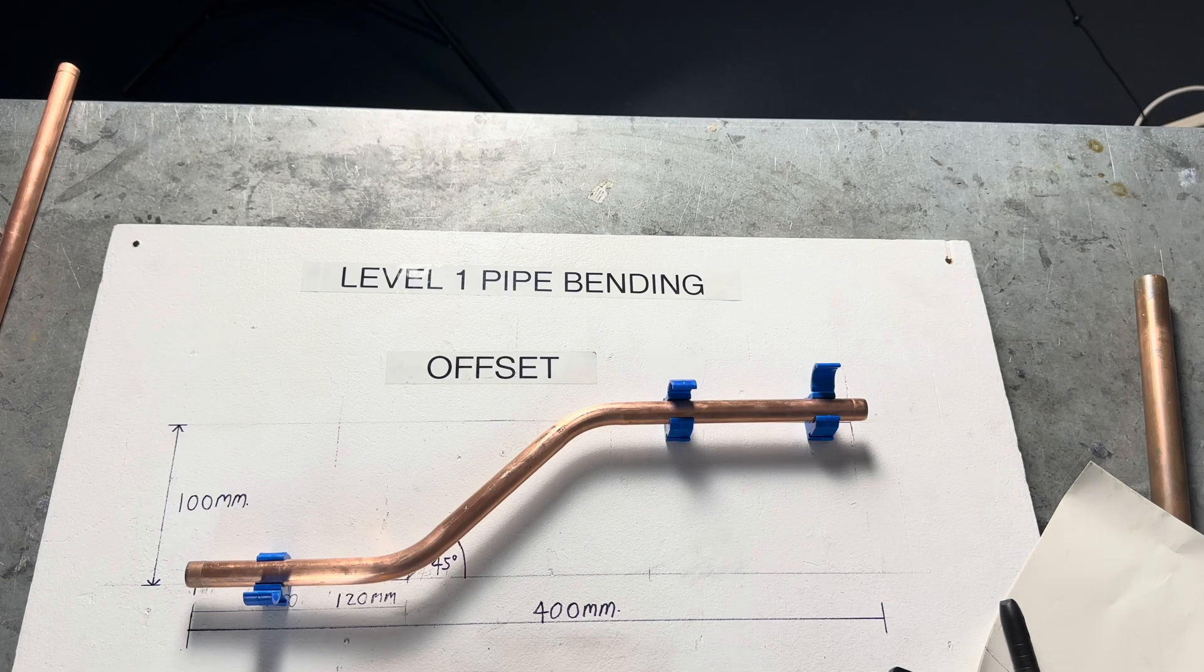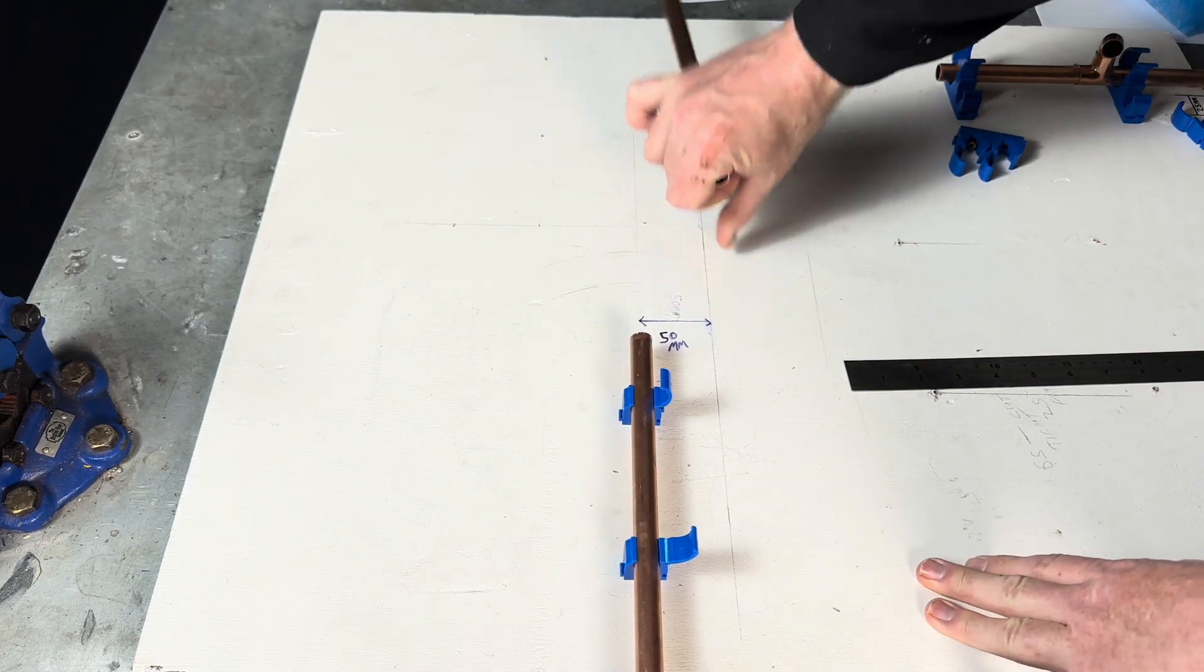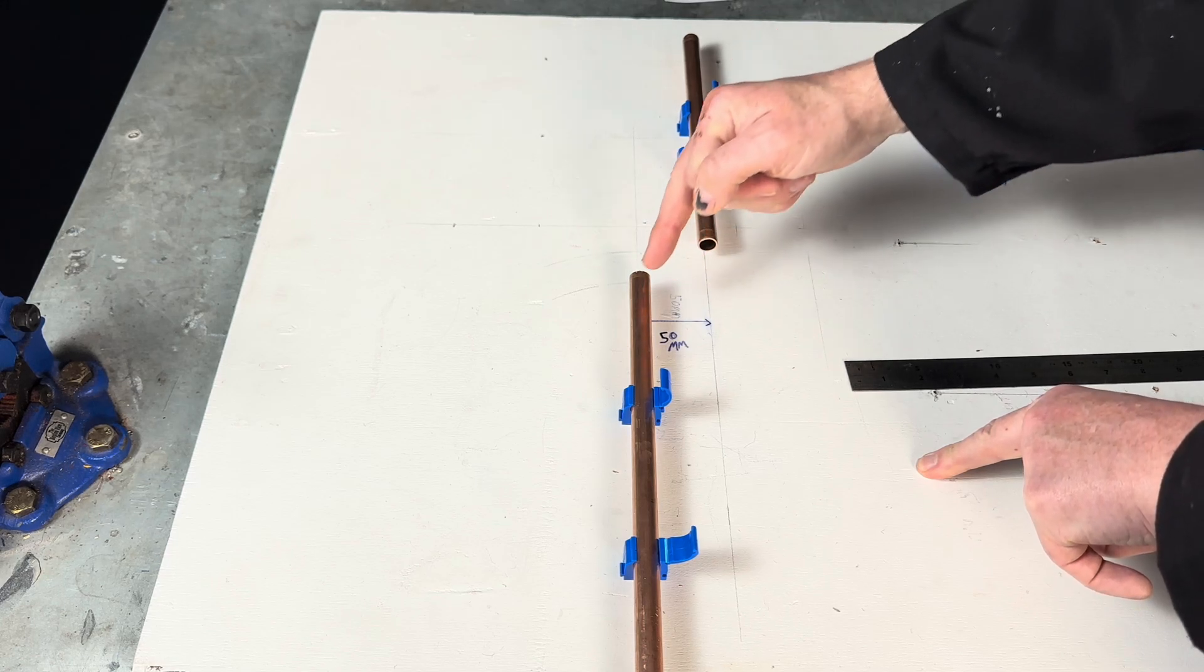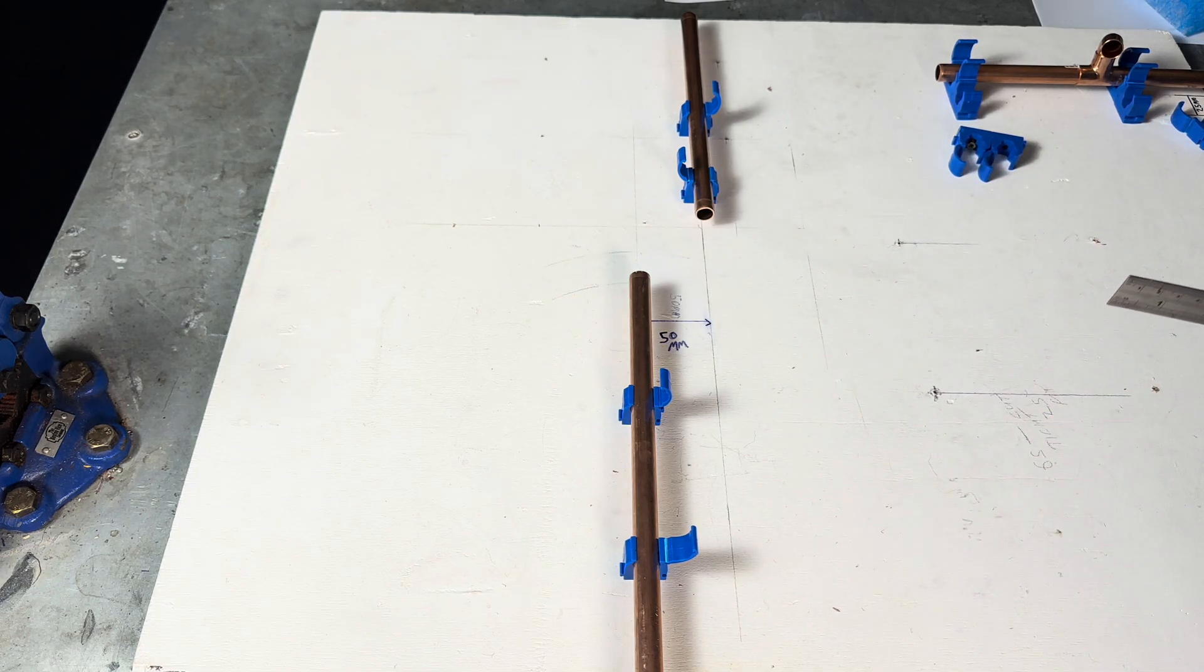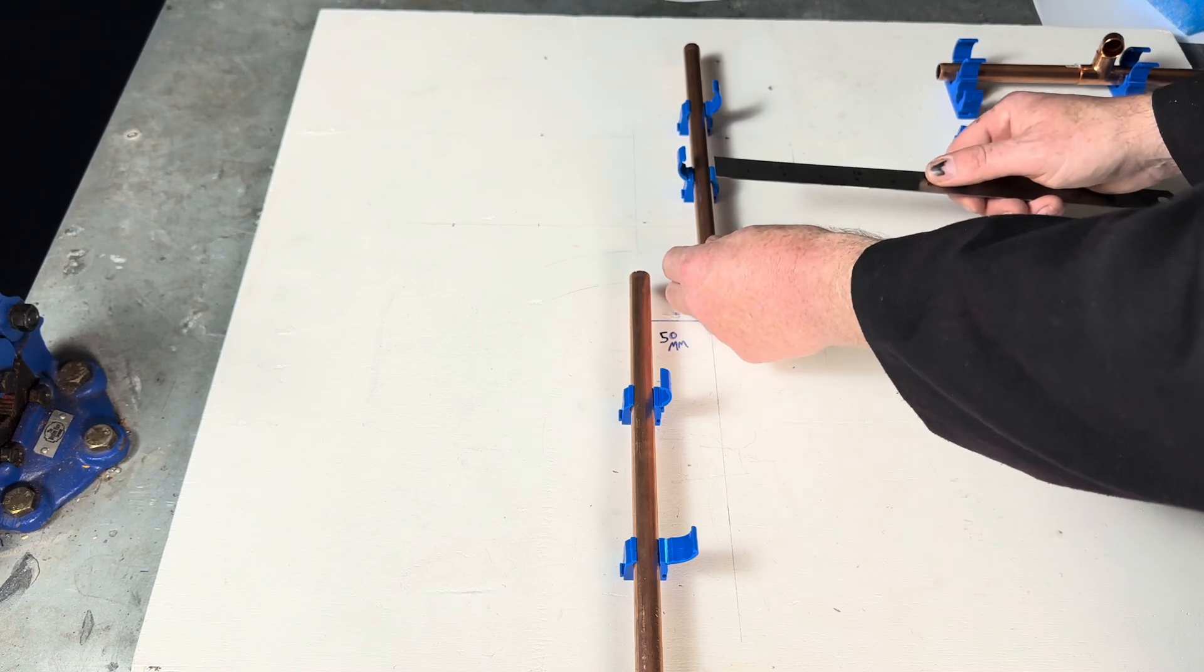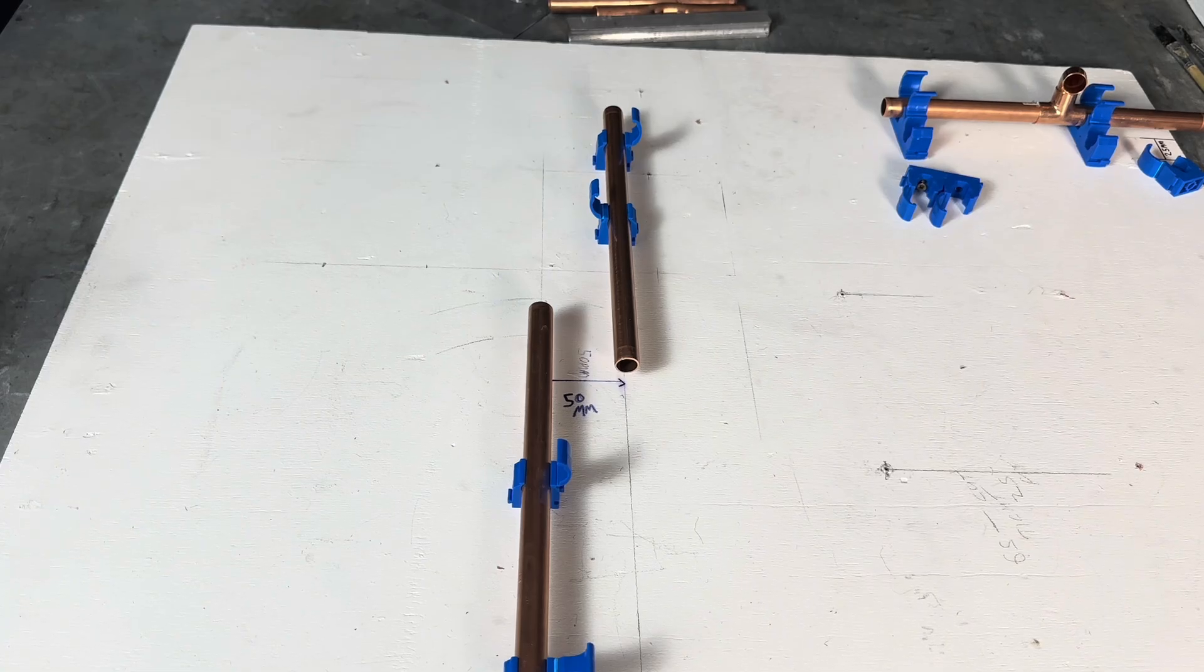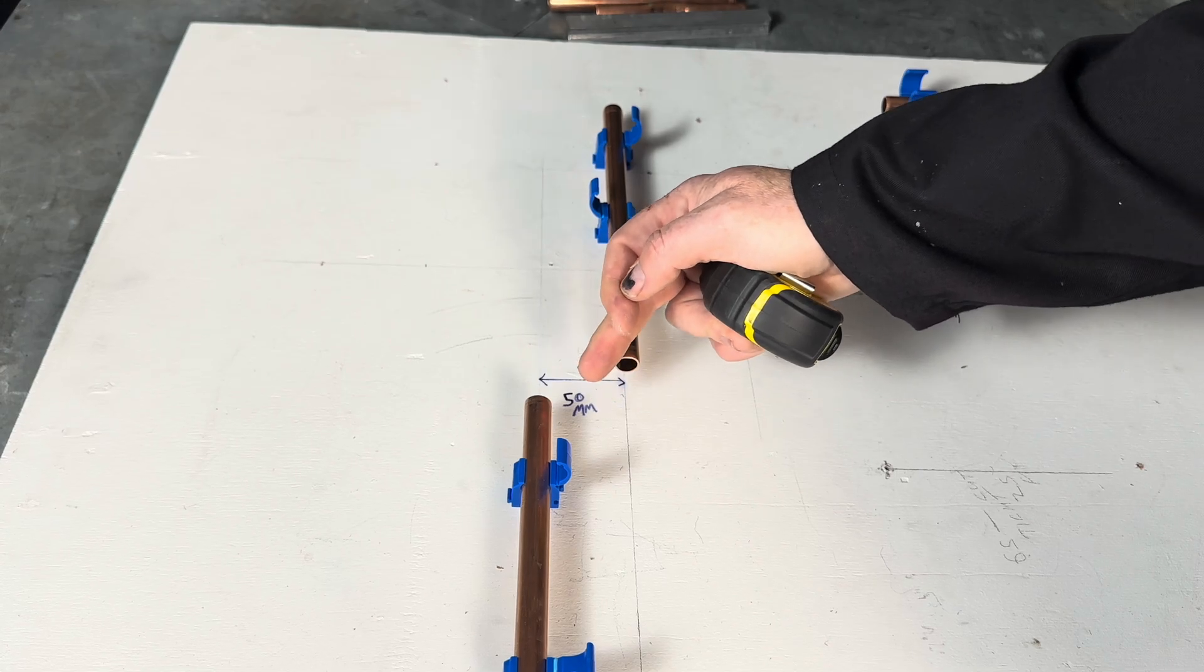And there you have it. Typical real life situation. So you've got some pipe coming up here and you've got some pipe here. And you need to get from there to there by doing an offset. Right. So the first thing you need to do is you need to know the centre to centre measurement. So we're using 15 mm pipe. So the centre to centre measurement is 50 mm. So the next question is, what angle do we need to bend this?